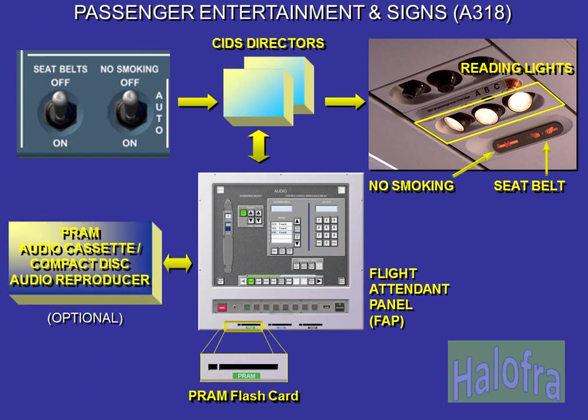On the A318, the FAP audio page provides controls and displays for the pre-recorded announcement and music, PRAM. The PRAM can be a flashcard type, directly plugged into the FAP. An audio cassette compact disc audio reproducer, which was installed on the previous A320 family, can be optionally installed.